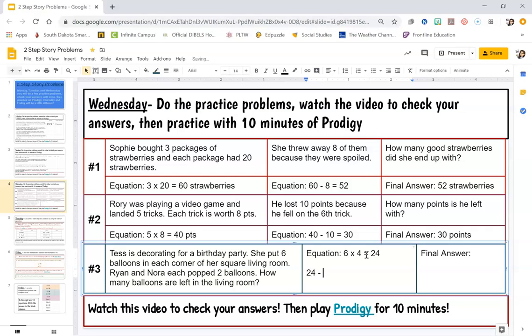And then let's see what happened next. I had 24 balloons. Ryan and Nora each popped two balloons, so I can do 24 minus - I can just do right in my head - two times two or two plus two. They both popped two, Ryan popped two, Nora popped two.